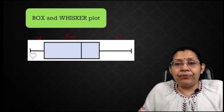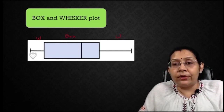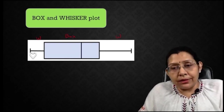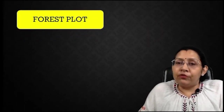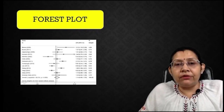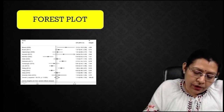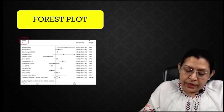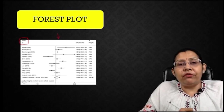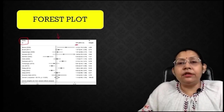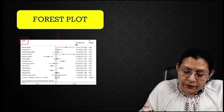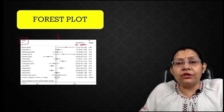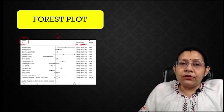Now a question can come to mind: are there other types of plots also? Yes, we have a few other types of plots and we should be able to differentiate them. It can be a forest plot — you can identify it because on one side we have the ID of the study, then the line of no effect, and we have the interpretation showing what parameter we are calculating, either the odds ratio, relative risk, or standard error, and we have the 95% confidence interval values.